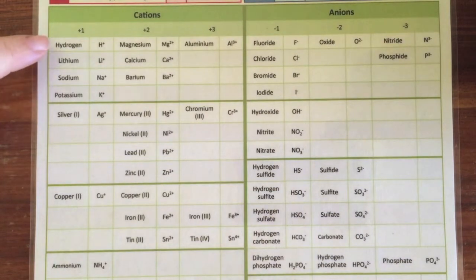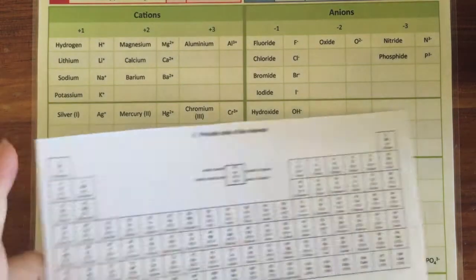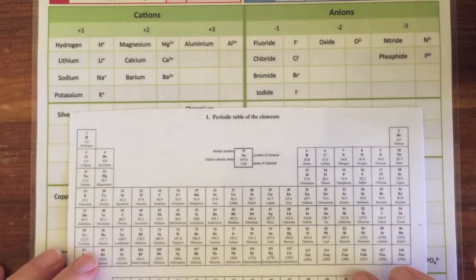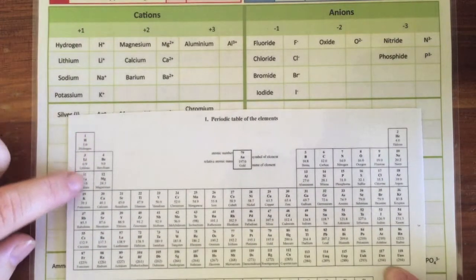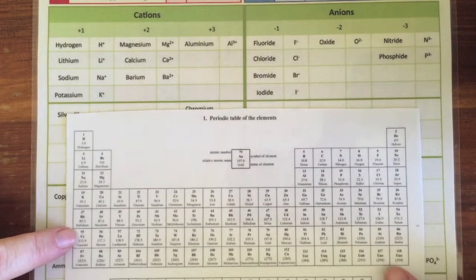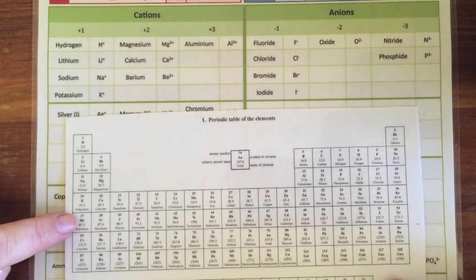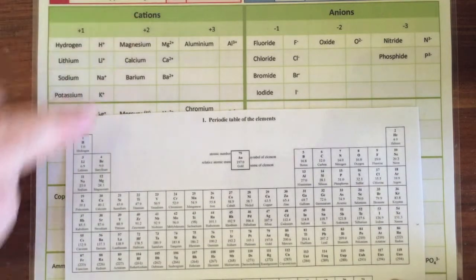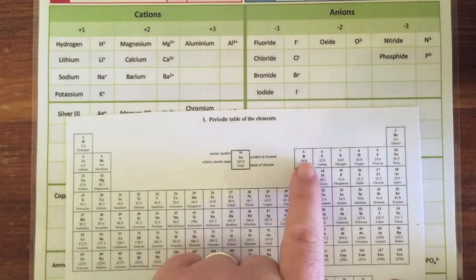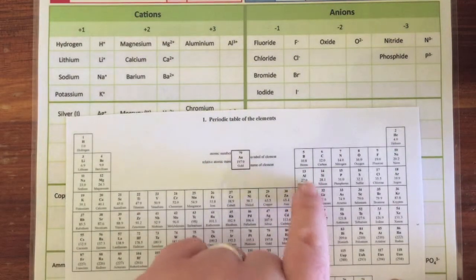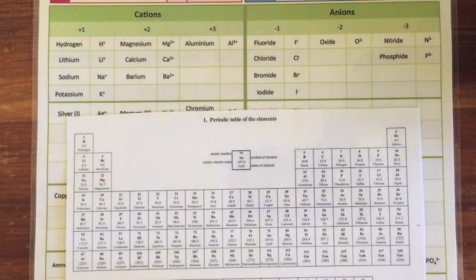the ones above that line. If we look at our periodic table, the plus ones are all in the group one group, plus twos are in group two, and aluminum is in group 13 but it's over here.